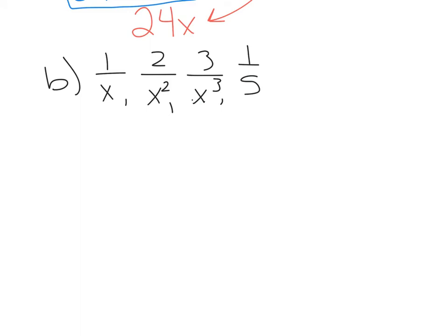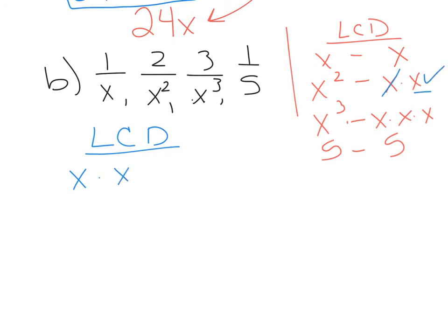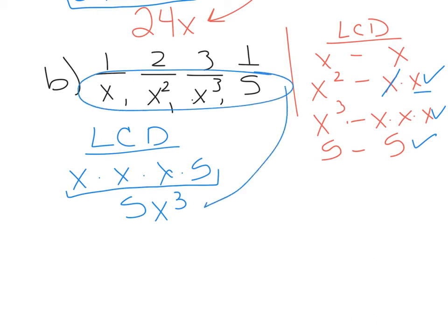For letter B, we have 1 over x, 2 over x squared, 3 over x cubed, and 1 over 5 — we're just finding a common denominator. List the denominators: x, x squared, x cubed, and 5, and break them into prime factors: x; x times x; x times x times x; and 5. Take the whole first list — just an x. From the second list, I already have one x, so I only take one more. From the third list, I already have two, so I take one more. Then take the 5. Multiplying all together gives a common denominator of 5x cubed.